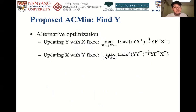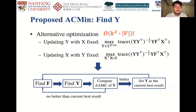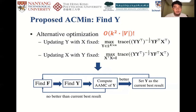With the top-K eigenvectors, we can find Y — namely the clustering result — using an alternative optimization process which runs in linear time. To summarize, the AC-mean algorithm runs iteratively. In each iteration, it first computes an approximate top-K eigenvector matrix F, and then based on it, computes an approximate clustering result Y. After that, AC-mean checks if the current Y achieves a better AAMC score compared to the current best result. If yes, it updates Y as the best result, then enters the next iteration.